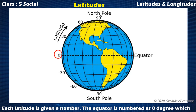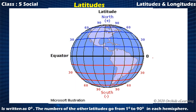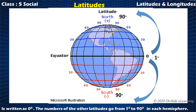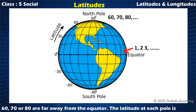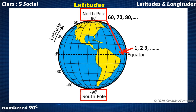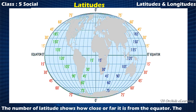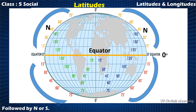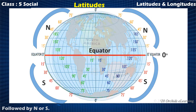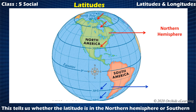The equator is numbered as zero degrees. The numbers of the other latitudes go from 1 to 90 degrees in each hemisphere. Latitudes numbered 1, 2, and 3 are close to the equator, while latitudes numbered 60, 70, or 80 are far away from the equator. The latitude at each pole is numbered 90 degrees. The numbers of the other latitudes are followed by N or S, which tells us whether the latitude is in the northern hemisphere or southern hemisphere.